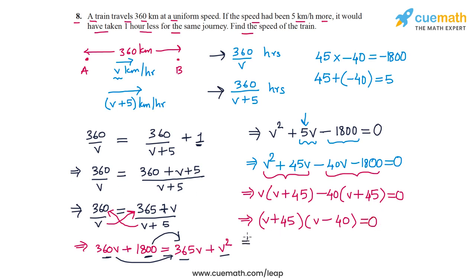From here I get two values of v. I get v equal to minus 45, or I get v equal to 40. Because v is the speed of the train, this root minus 45 does not work because the speed cannot be negative. So the only valid root in this case is v equal to 40.